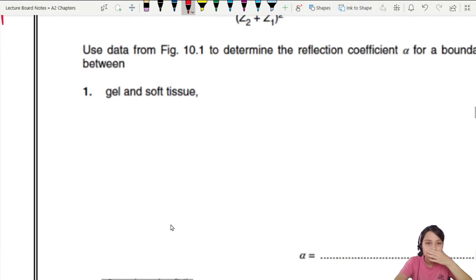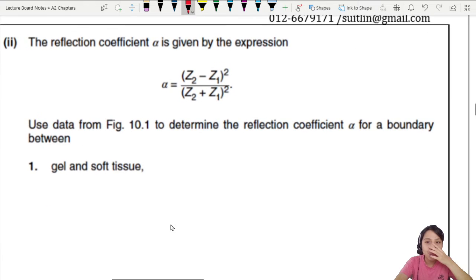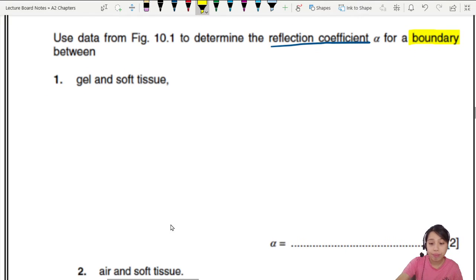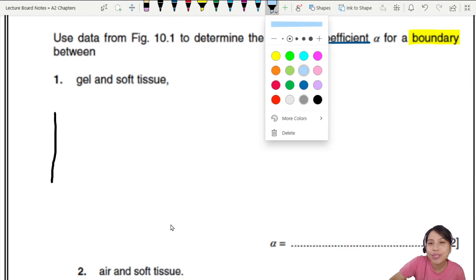Next. This equation looks familiar. The reflection coefficient is given by this. They gave it to us. Very nice. Use the data to determine the reflection coefficient for the boundary. So this coefficient alpha can only use at boundary between, who are we looking at? Gel and soft tissue. I guess we could draw a picture if you want. Let's try that.